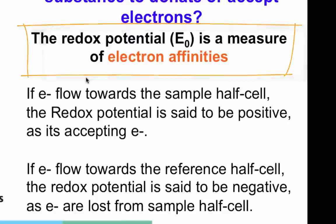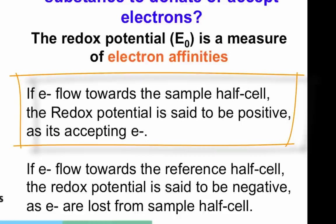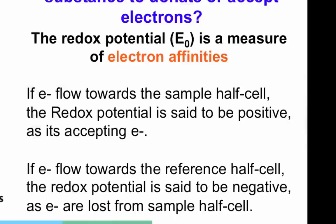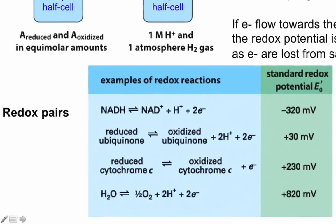If electrons move from the reference half cell to the sample half cell, we measure a positive voltage, indicating that molecules in the sample half cell are able to accept electrons. On the other hand, if electrons flow from the sample half cell to the reference half cell, the molecules in the sample half cell are good electron donors. That gives you the direction of the standard redox potential, seen as E prime naught.